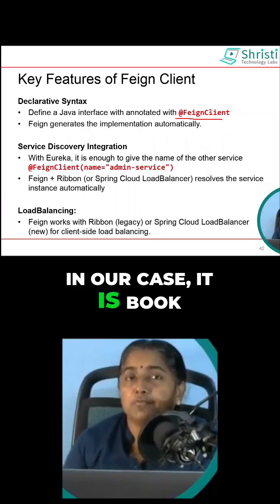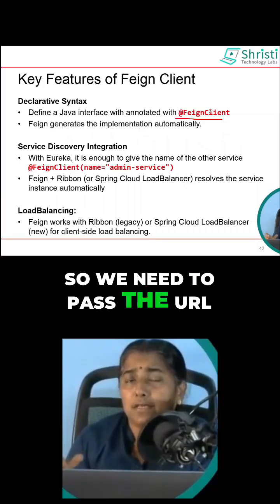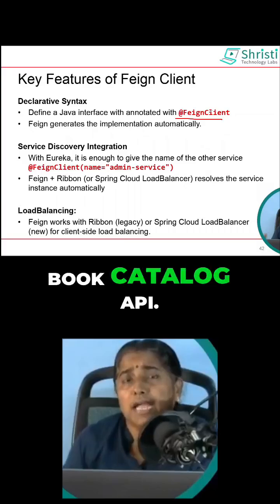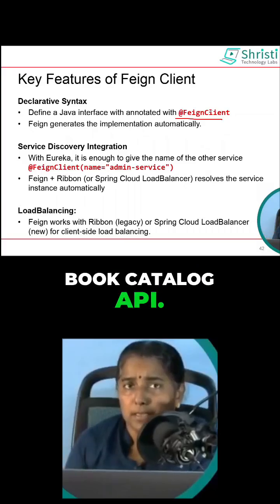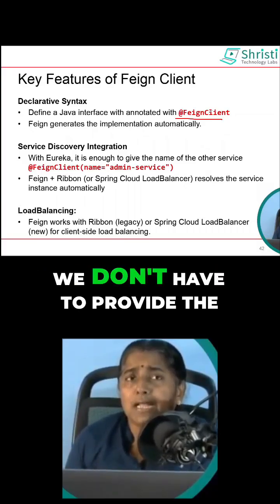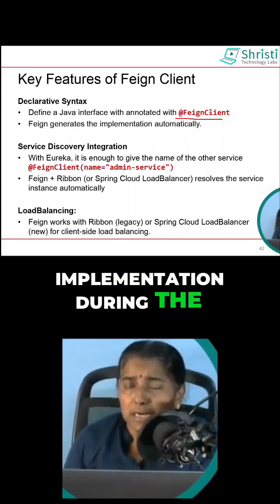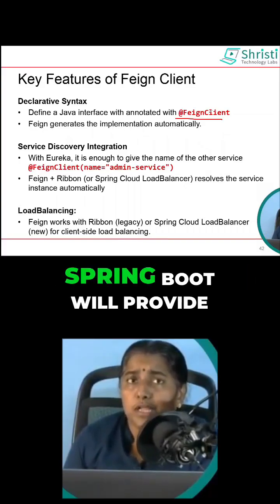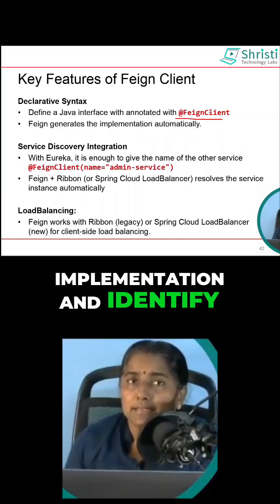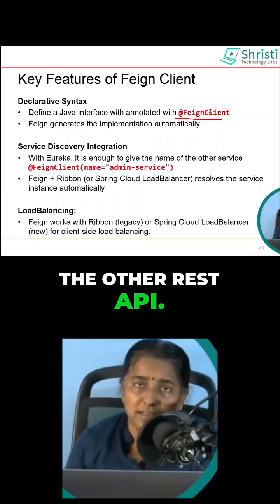In our case, it is the Book Catalog API. So we need to pass the URL or the REST endpoint of Book Catalog API. What about the implementation? We don't have to provide the implementation. During the runtime, Spring Boot will provide the implementation and identify a way to communicate with the other REST API.